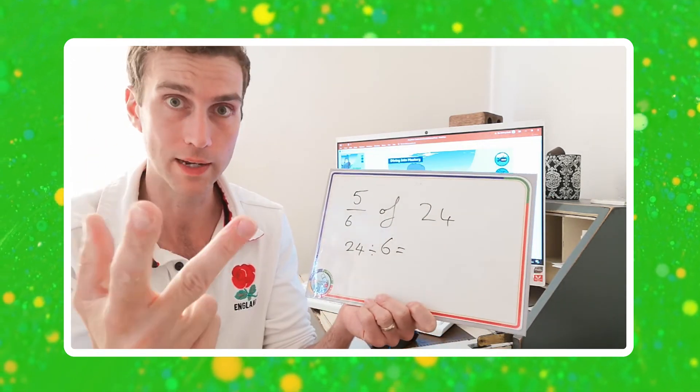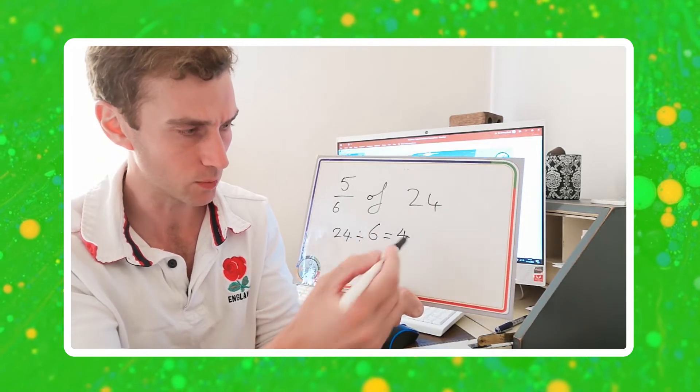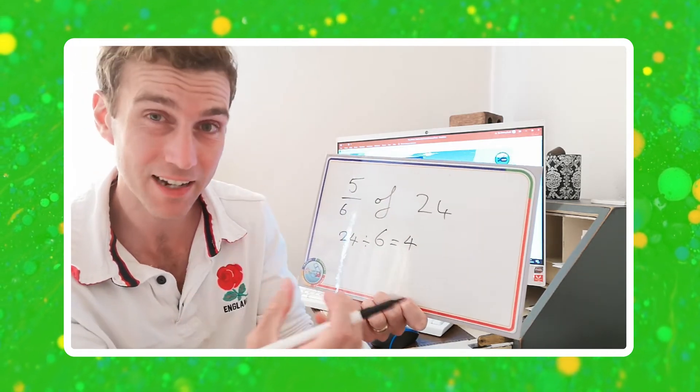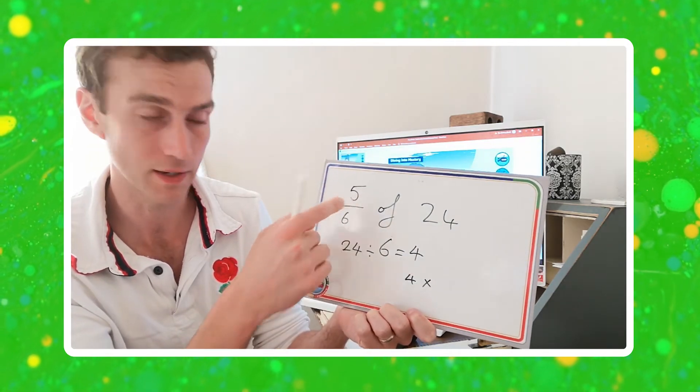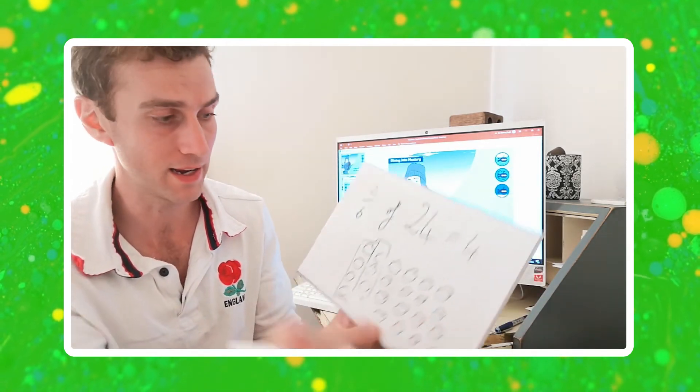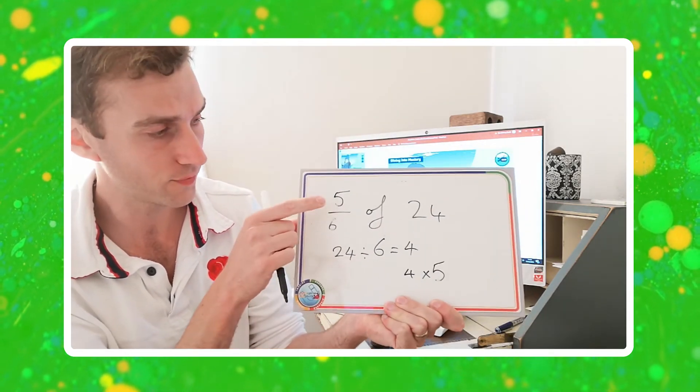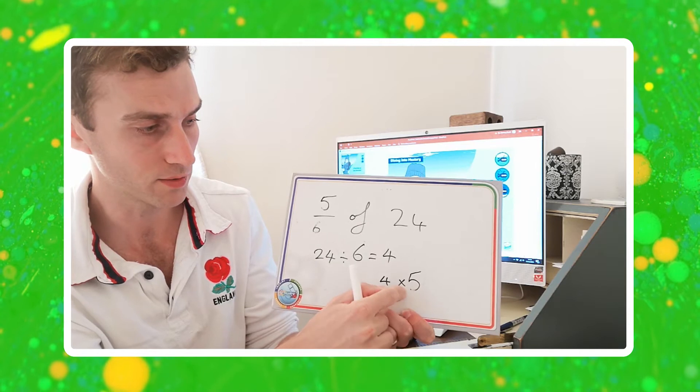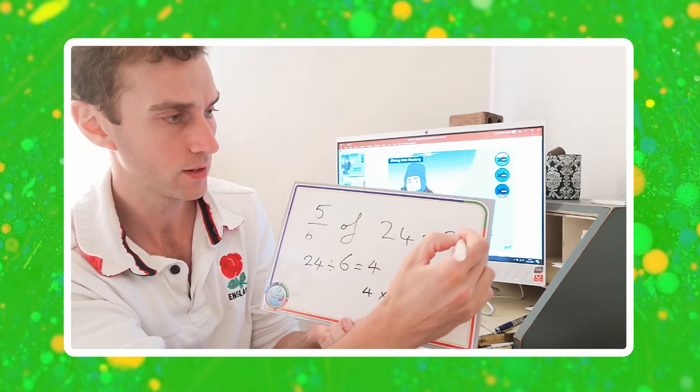Counting 6, 12, 18, 24. So I counted 4 times to get to 24. 24 divided by 6 equals 4. But remember, I'm not trying to find one group, I'm trying to find five groups. So the next thing I have to do is take this number, 4, and times it by the numerator, because that's your repeated addition. That's, if you're looking at the array, going 1, 2, 3, 4, 5. That's the 5 there. I have to count 5 of my groups. So 4 lots of 5, 5 lots of 4, which would be 20. So 5 sixths of 24 equals 20.